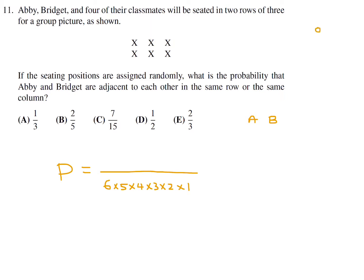That gives 8 arrangements for same-row adjacency. Now we also have the cases where they're in different rows but the same column. For each of the three columns, it could be A, B or B, A — that's another 6 scenarios. So 6 plus 8 equals 14 total favorable arrangements.